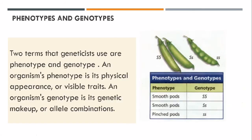Two terms that geneticists use are phenotype and genotype, and it's very important that you understand them. An organism's phenotype is its physical appearance or visible traits. An organism's genotype is its genetic makeup or allele combinations. Phenotype is what you can see — for example, a smooth coat or a pinched coat. Genotype means the combination: one can be dominant, another has dominant and recessive, and some are both recessive traits.